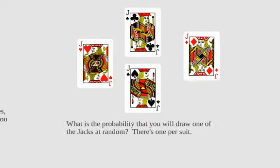Try this one. Four jacks. There's a jack of hearts, clubs, spades, and diamonds. What is the probability that you'll draw one of these jacks at random from the deck? Right? There's four out of 52. Written as a fraction. Make sure you simplify it.